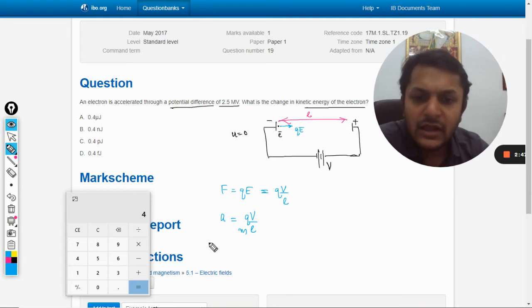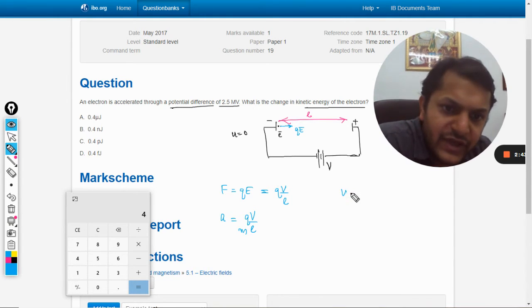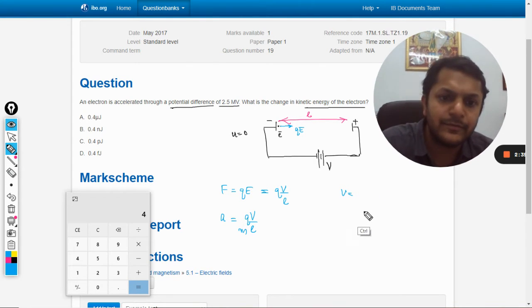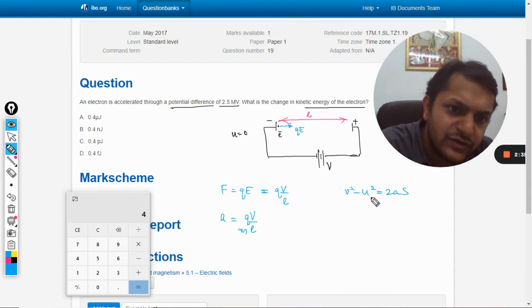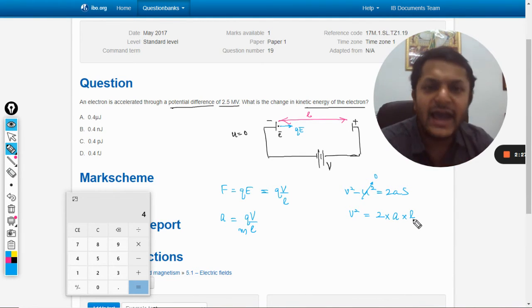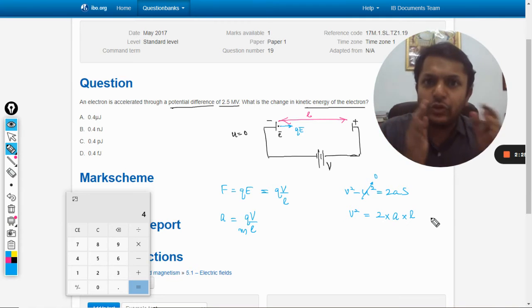Now V is equal to U plus AT, no, we will apply the formula V squared minus U squared is equal to 2AS. U is 0, so V squared is equal to 2 into A. I am keeping it A, S the distance traveled by the electron will be L. So once it will be moving through the distance L it will increase its speed to V.